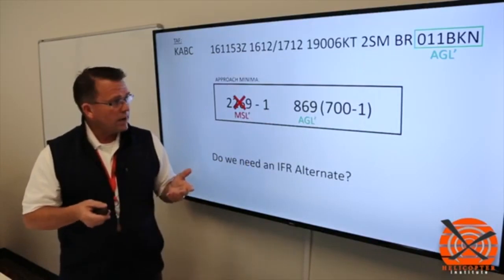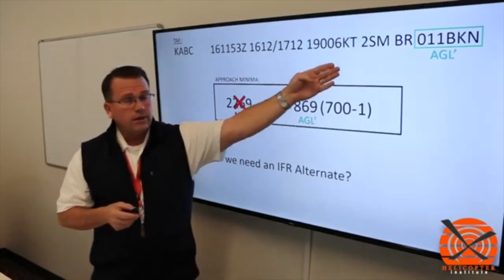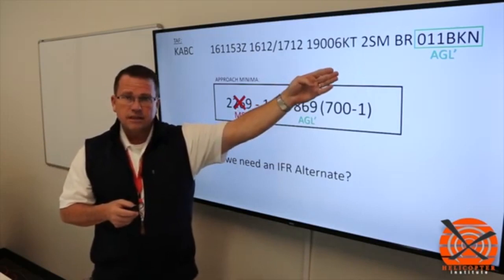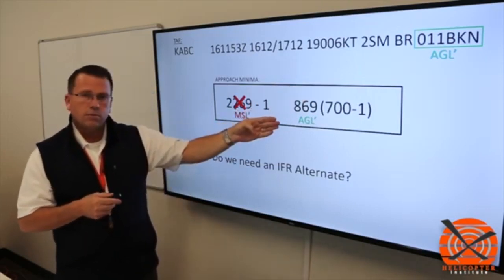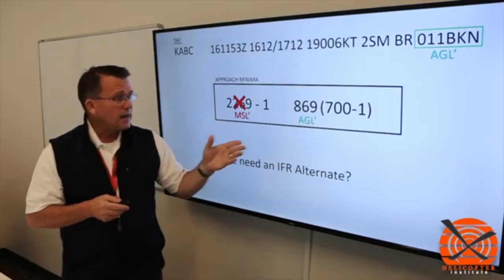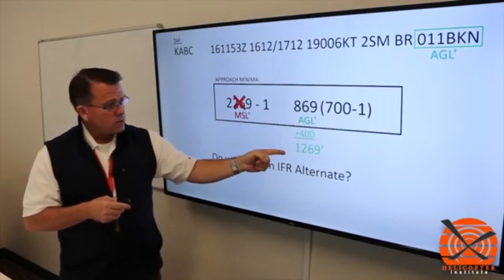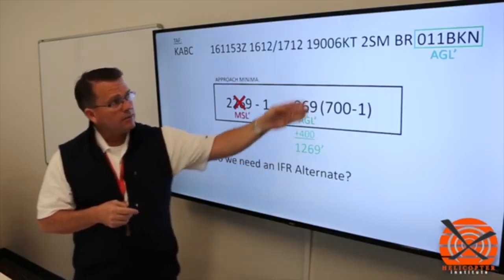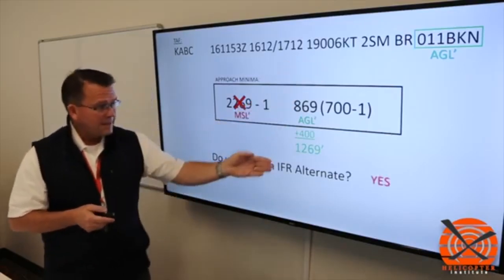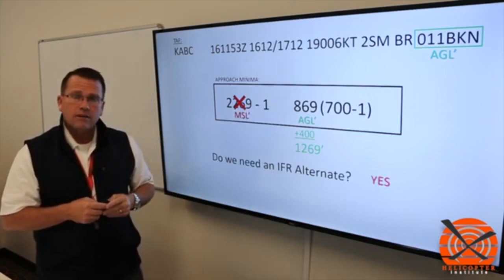So the easiest way, we already know that we have greater than 1,000 feet on the ceiling. However, does the 400 foot apply? So simply stated, I would just add 400 feet to this value. It says 1,269. We only have 1,100. So the answer would be, yes, we need an IFR alternate.